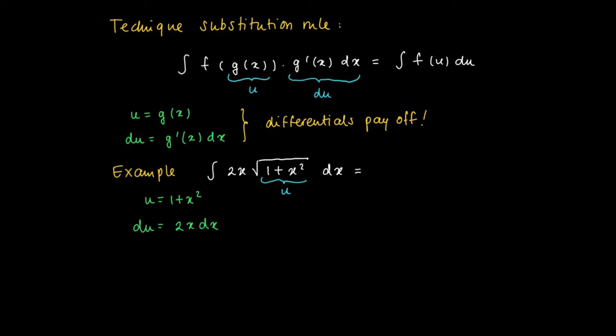But now we're writing 2x on the right hand side of the square root. We write it as the g'(x) times dx like we've seen above. So we may replace 1 plus x squared by u and 2x dx by du.